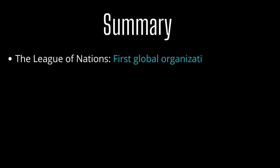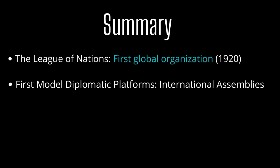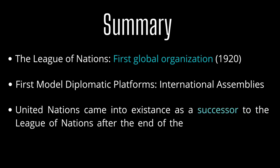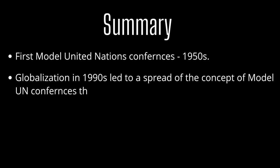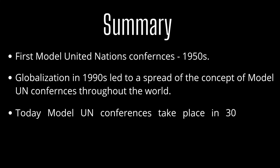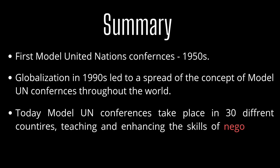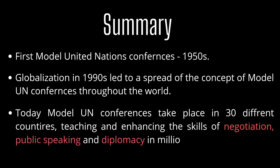Let us summarize our learning. The League of Nations emerged as the world's first global organization in 1920 following the end of the First World War. The first model diplomatic platforms emerged in the 1920s in the form of international assemblies. The United Nations organization came into existence in 1945 as a successor to the League of Nations following the end of the Second World War. The first model UN conferences came into existence in 1950 but were restricted to only a few elite western universities. Globalization in the 1990s saw the spread of this concept, leading to adoption of model UN conferences among academic institutions of developing countries worldwide. Today, model UN conferences take place in over 30 countries with millions of participants who enhance the skills of negotiation, public speaking, and diplomacy.